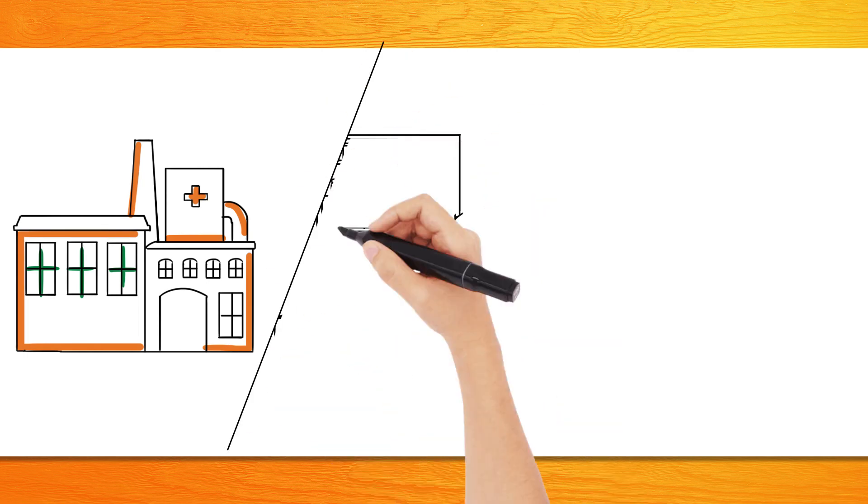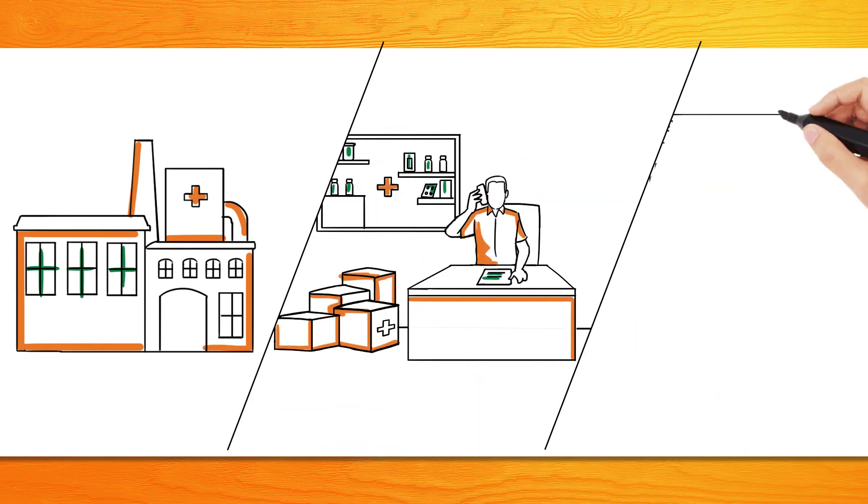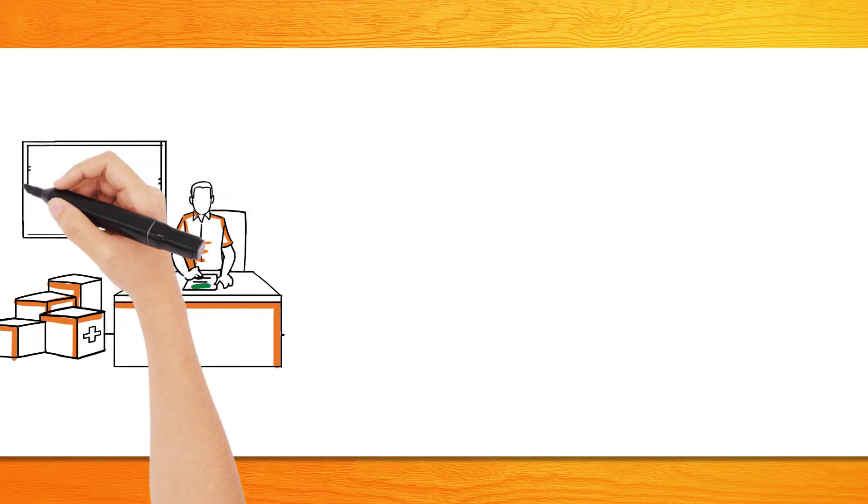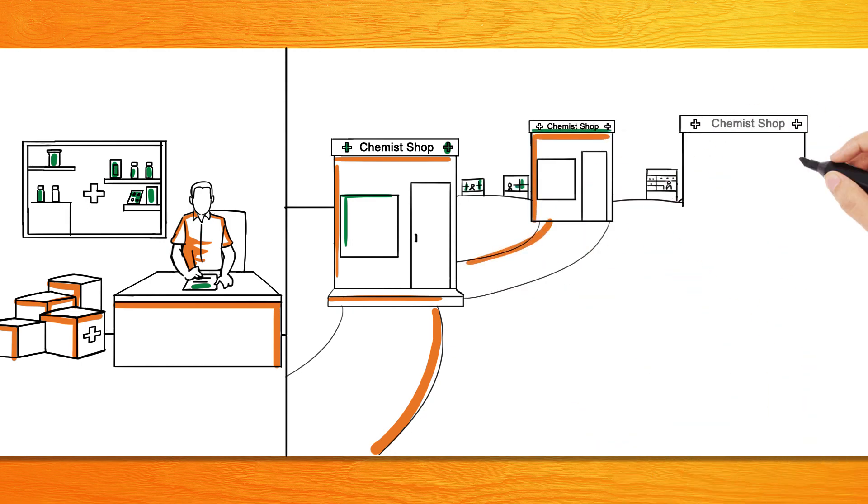We understand that the distributor receives pharmaceutical products from pharma companies which they further sell to chemists. Every distributor gets allotted an area of operation which covers approximately 200 to 400 chemist shops.